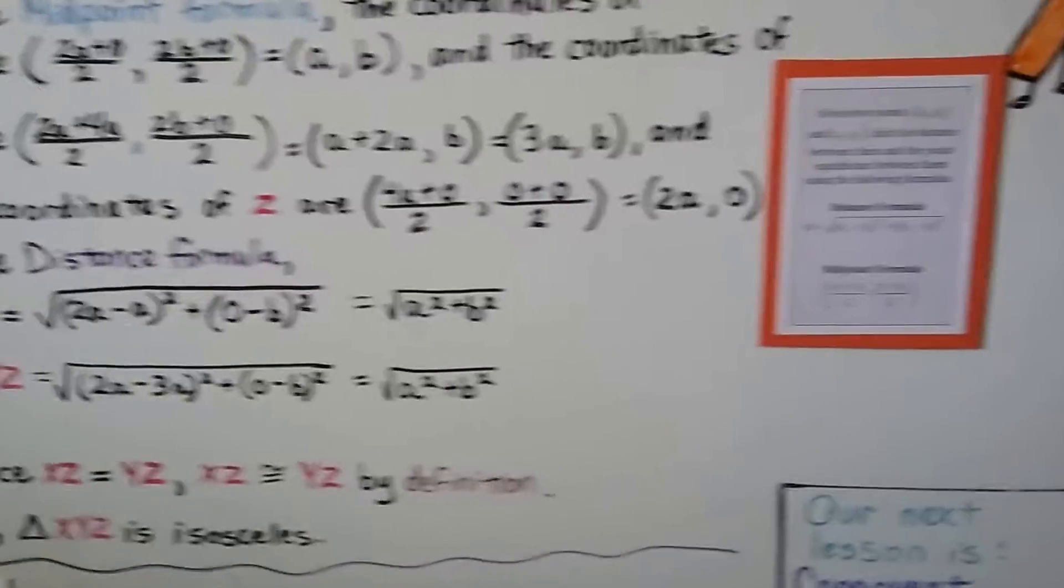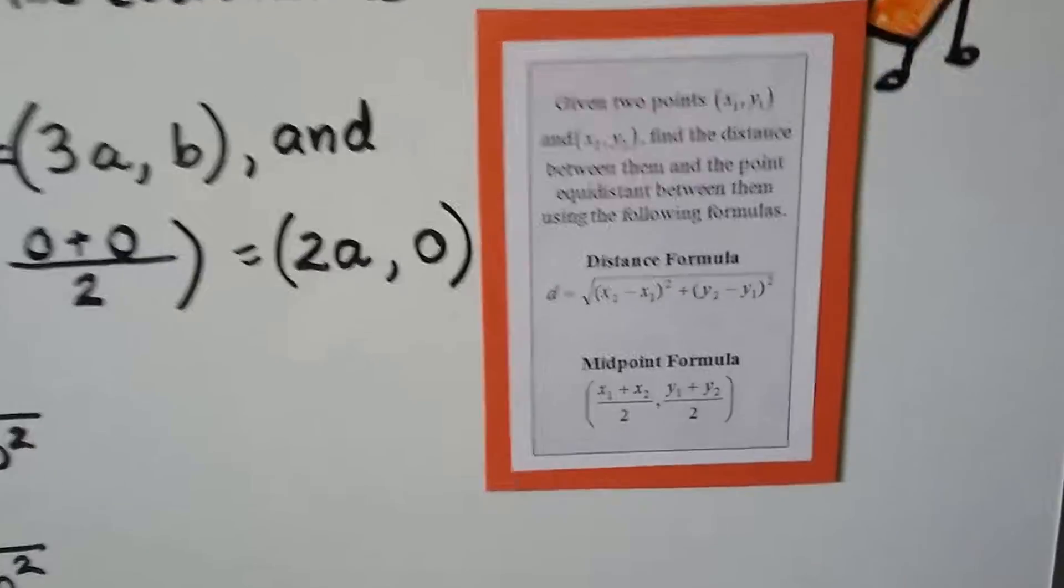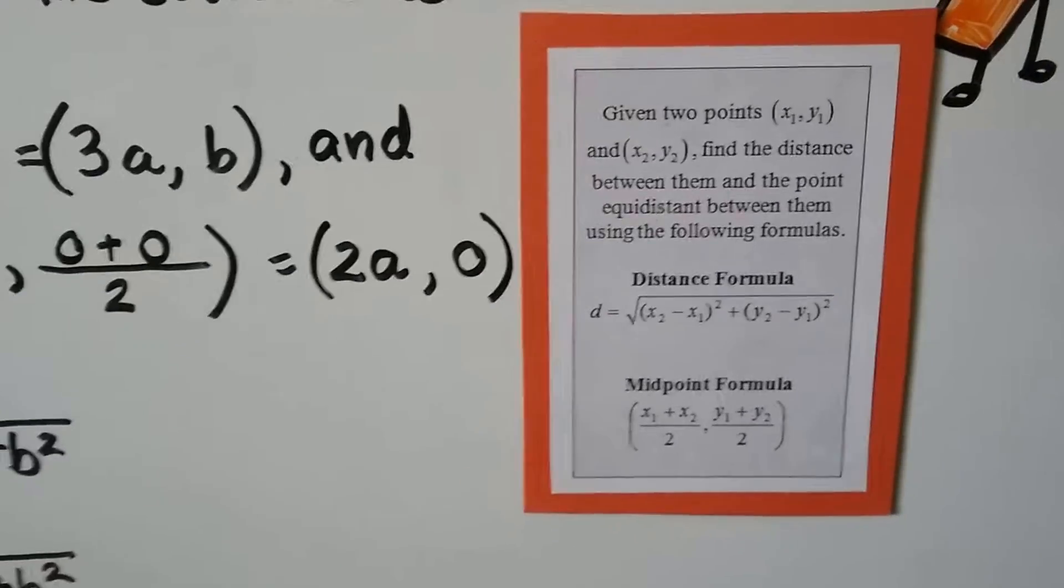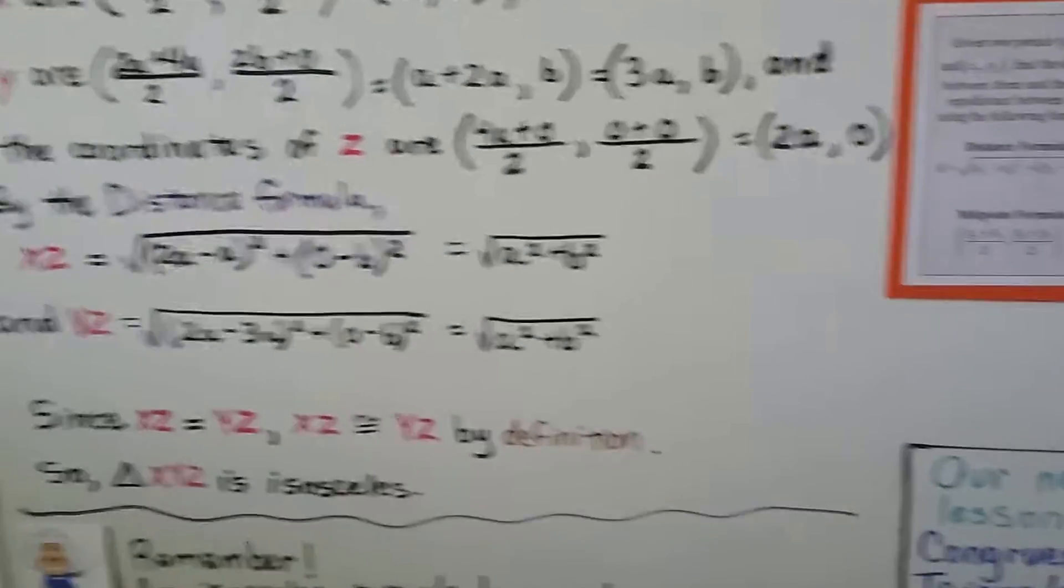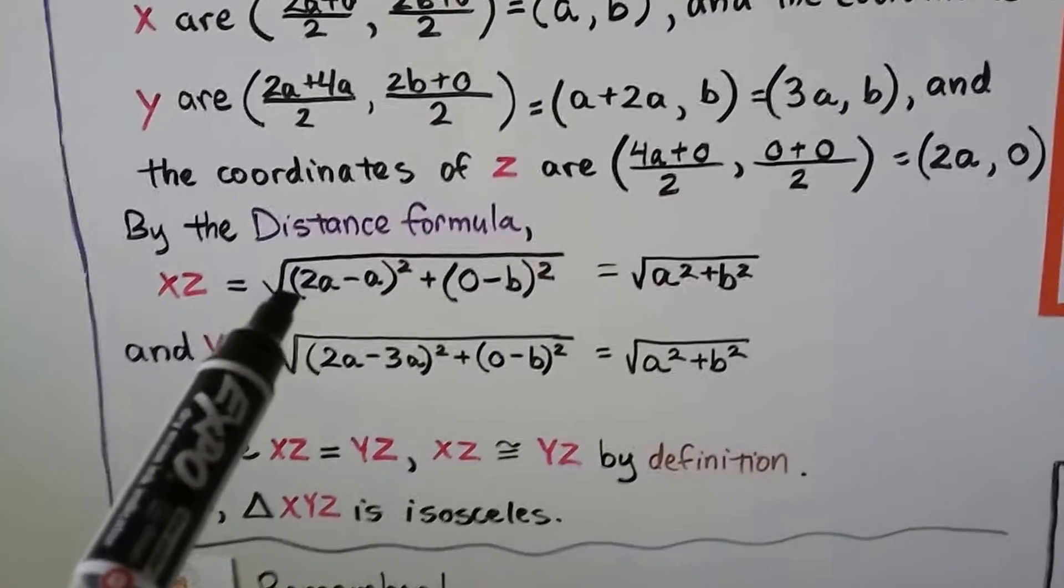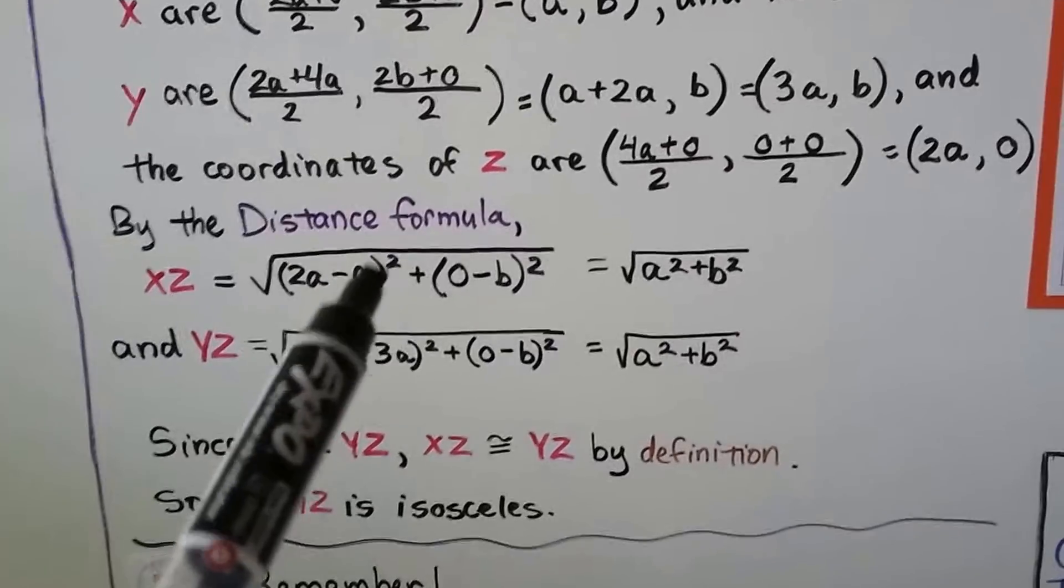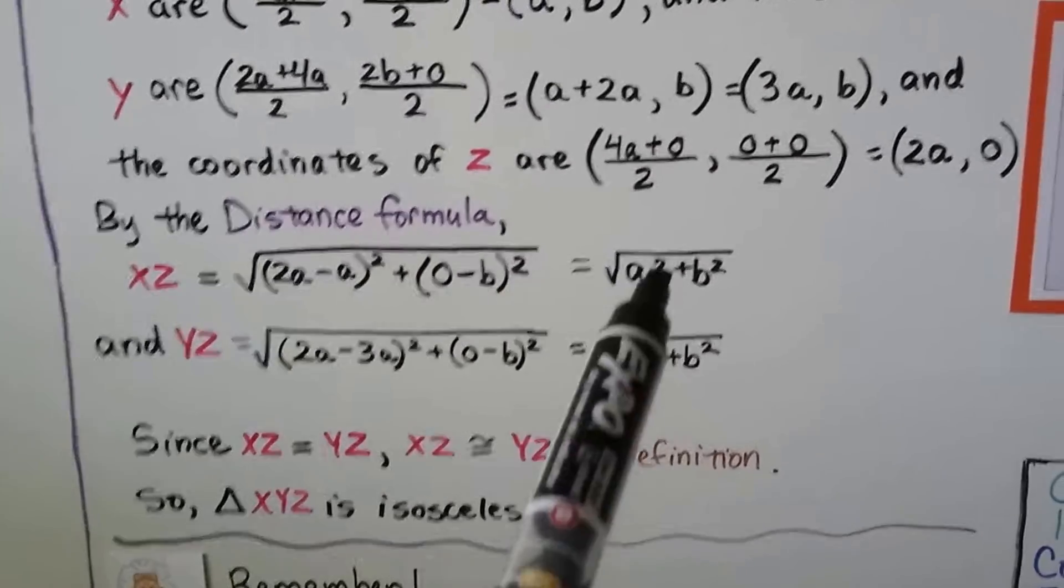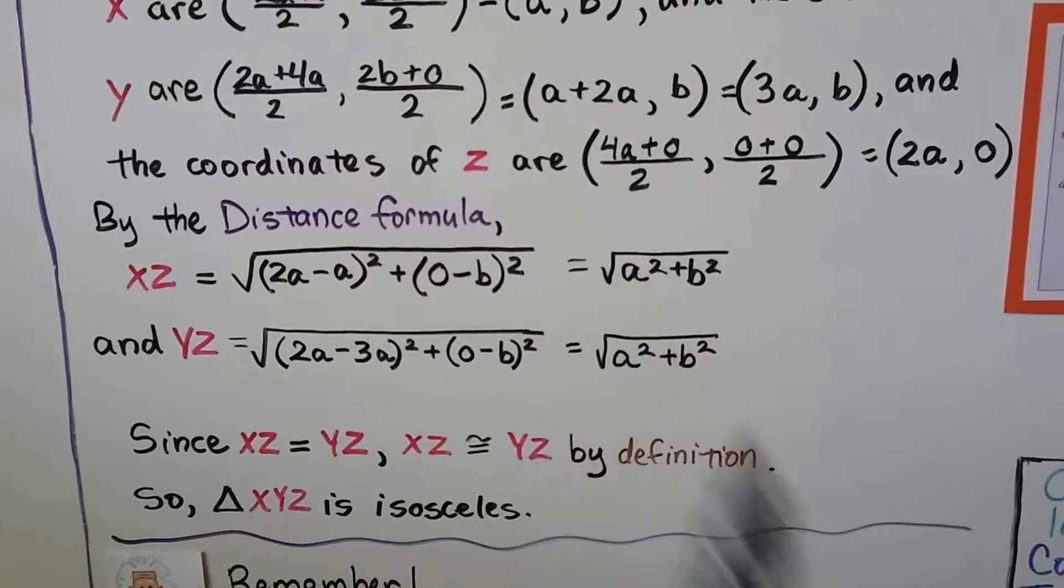Then we're going to use the distance formula. That's this one here. We did that in a previous video with the x and y values. The distance between two points. So by the distance formula, XZ is equal to the square root of (2a minus a) squared plus (0 minus b) squared. And that's going to simplify to the square root of a squared plus b squared.